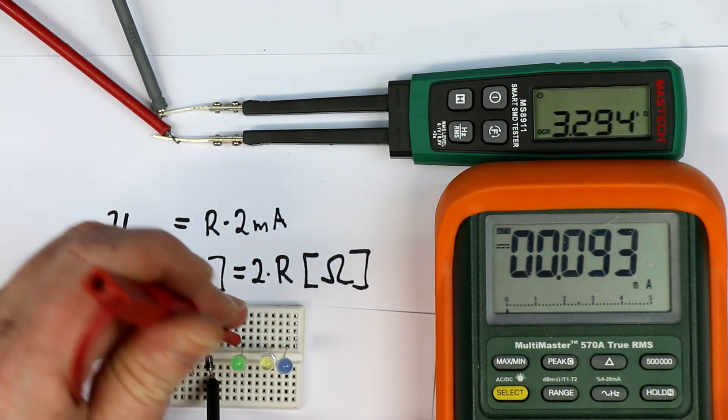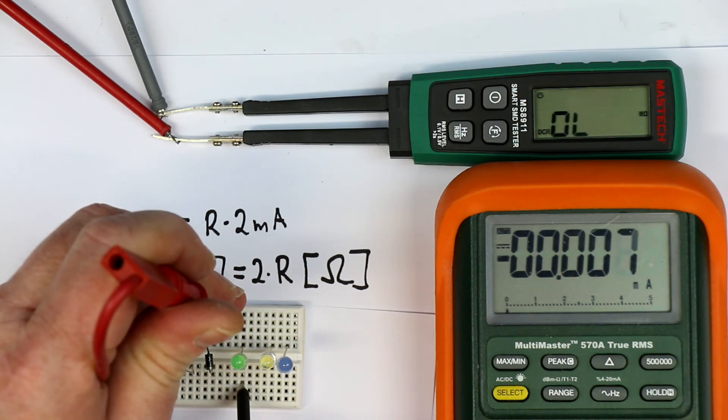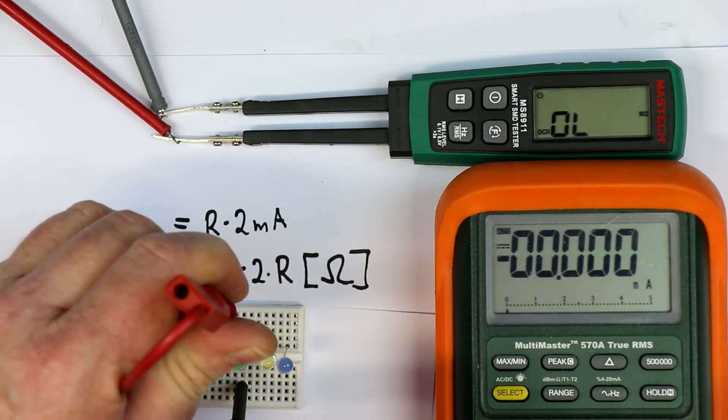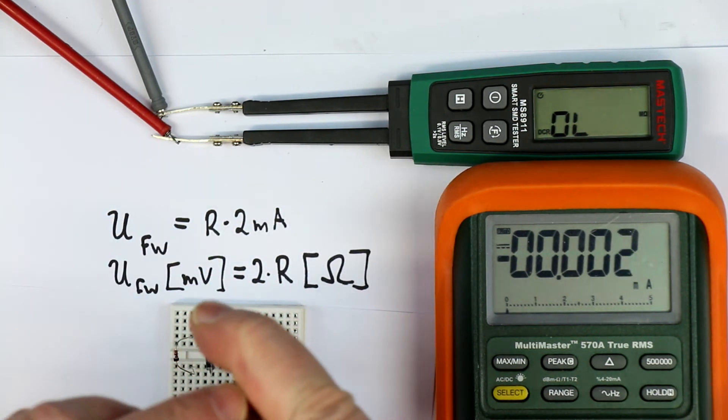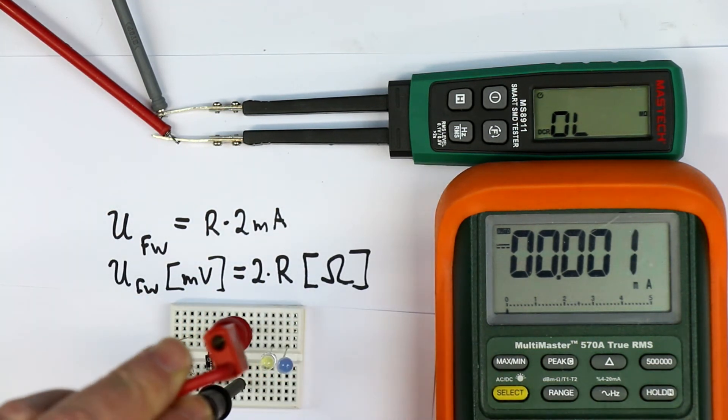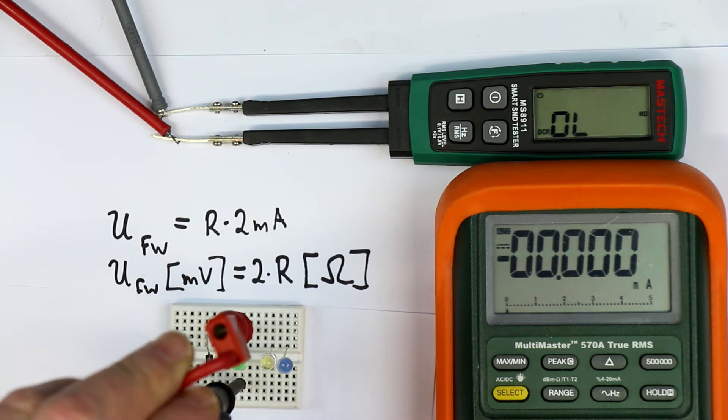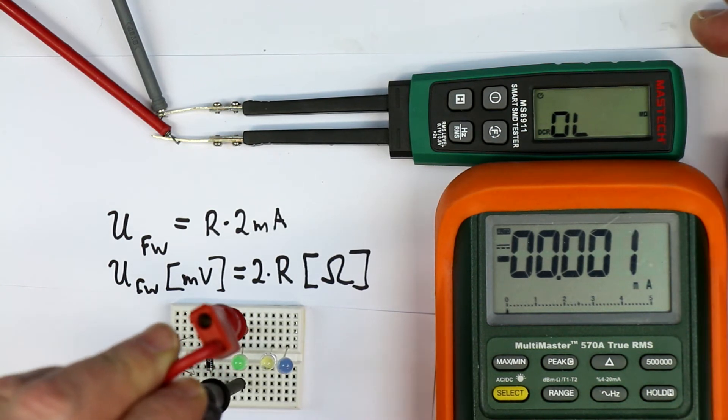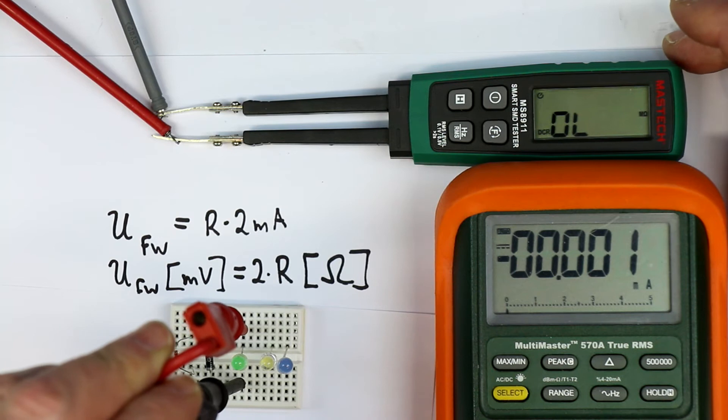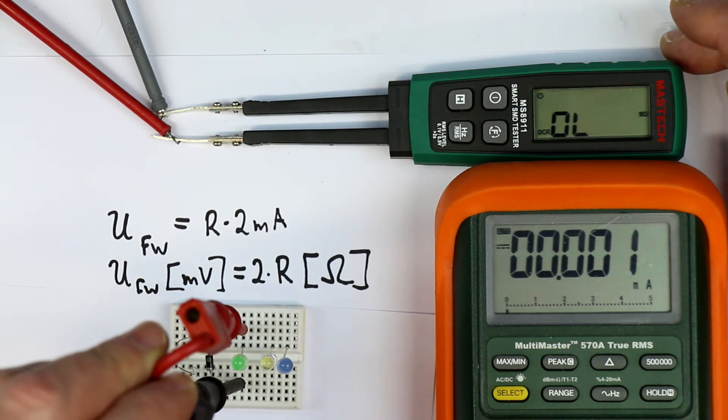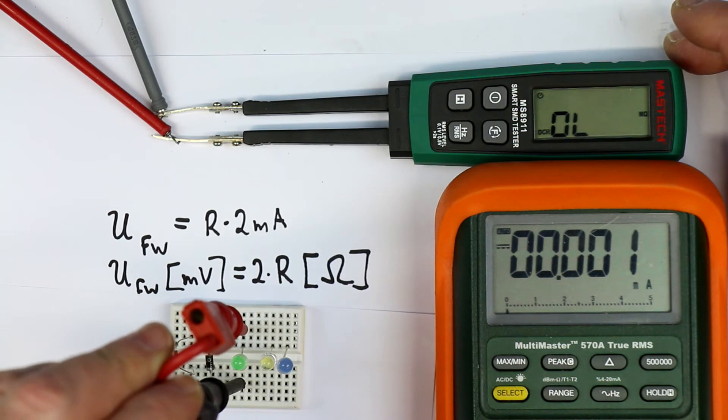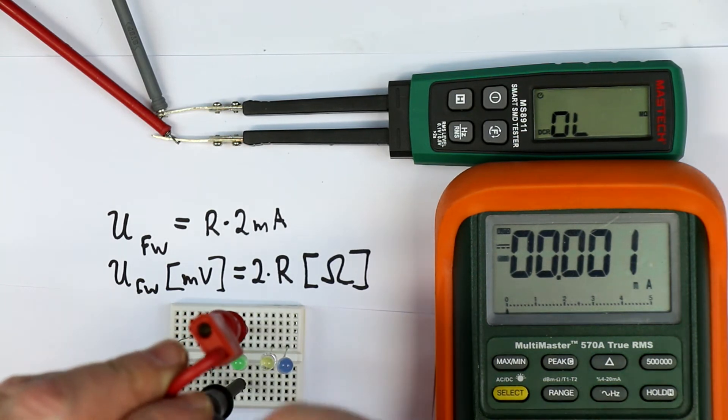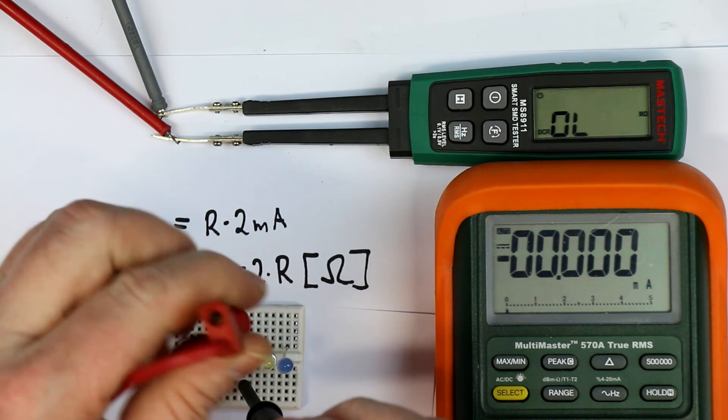So let's try as the next thing a green LED. And this doesn't light up at all and the current is zero. So apparently the measurement voltage here is a maximum of half a volt or one volt so that we can't measure any LEDs. So this is a little bit of a fail. I would have expected something better.